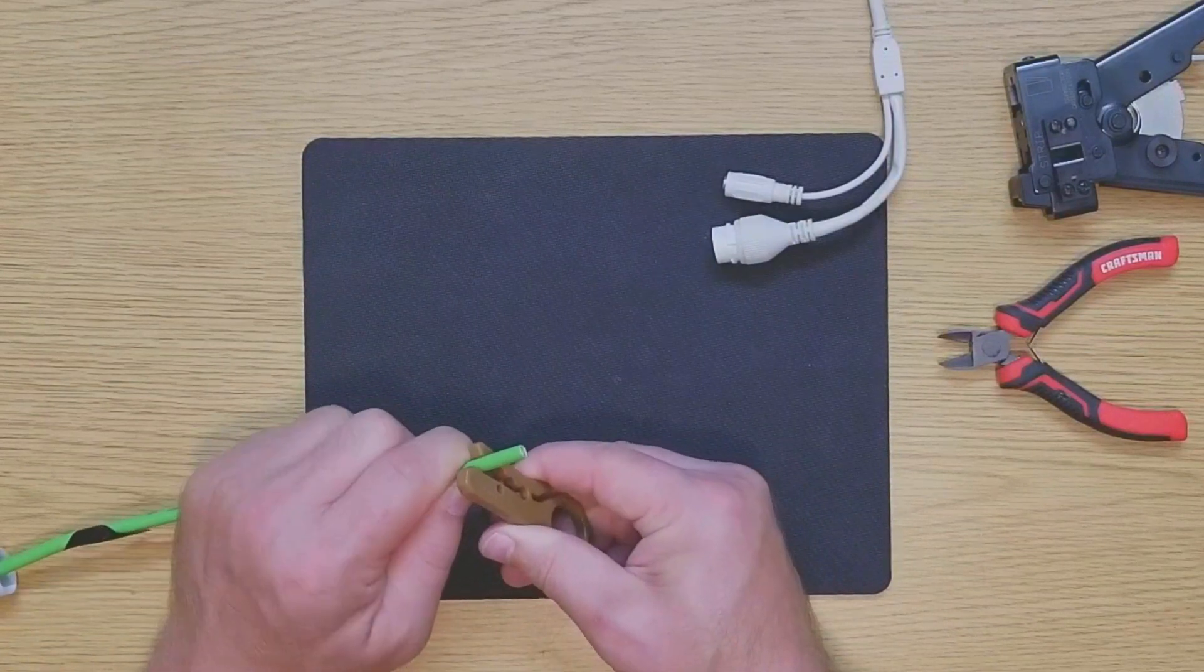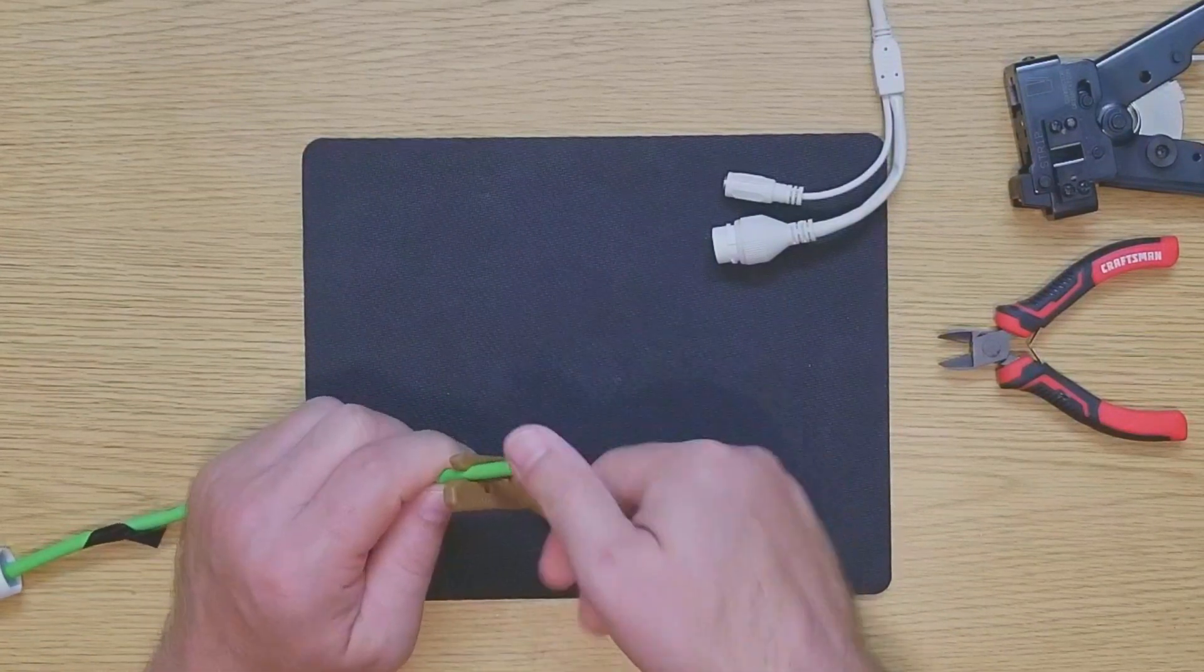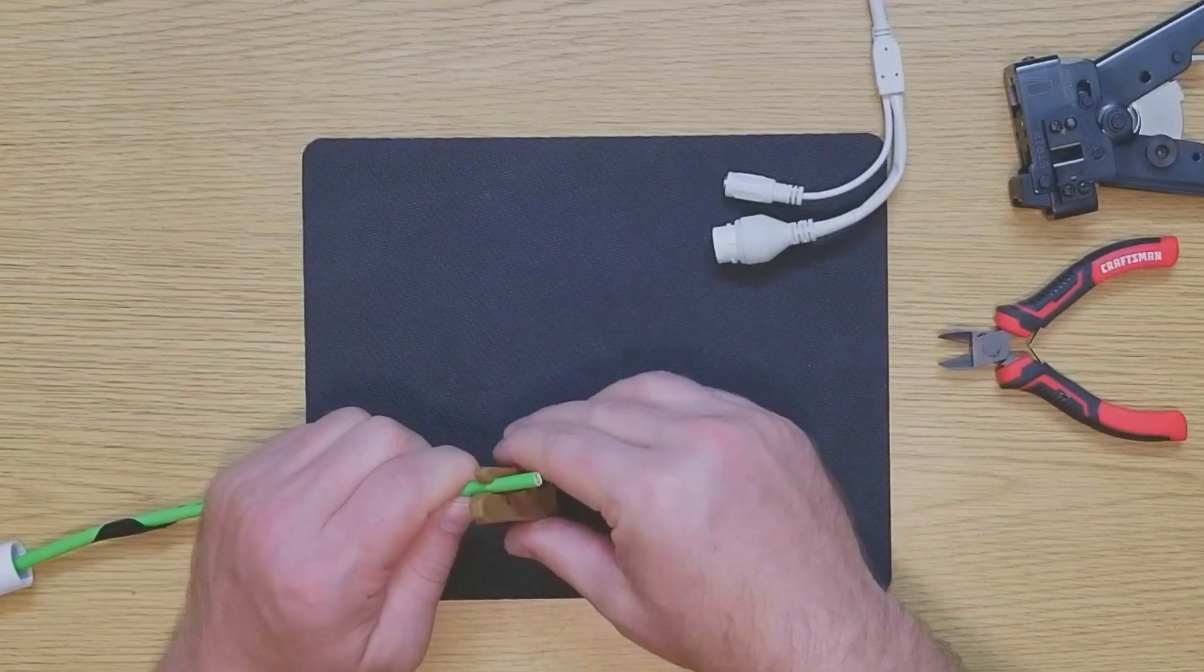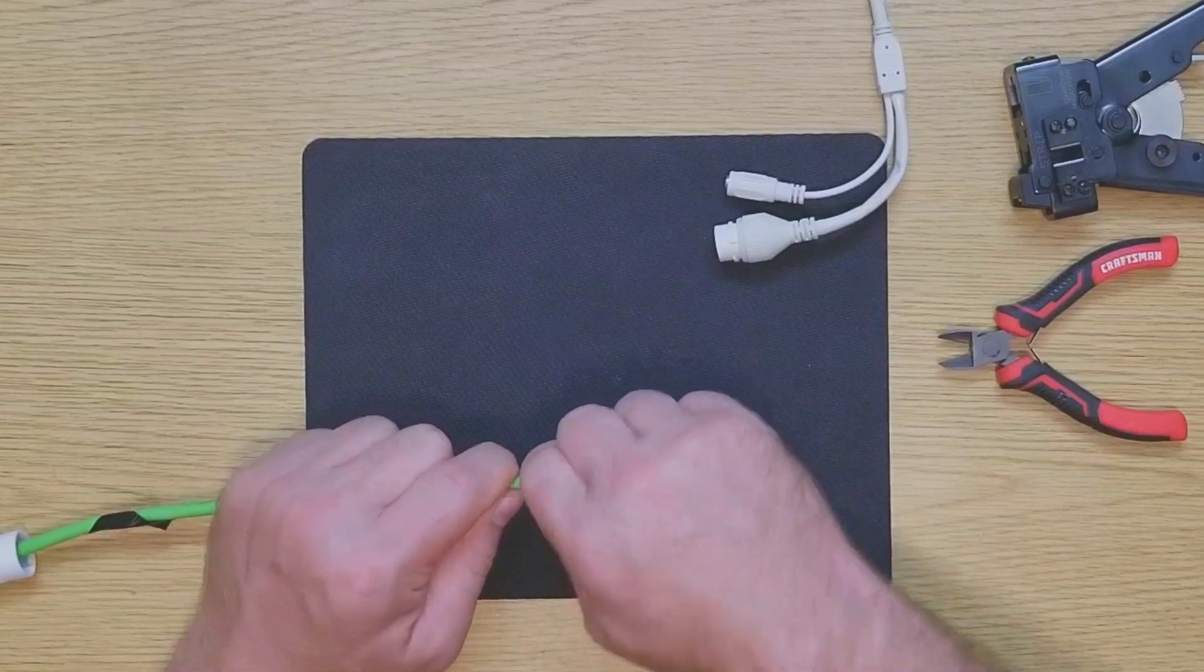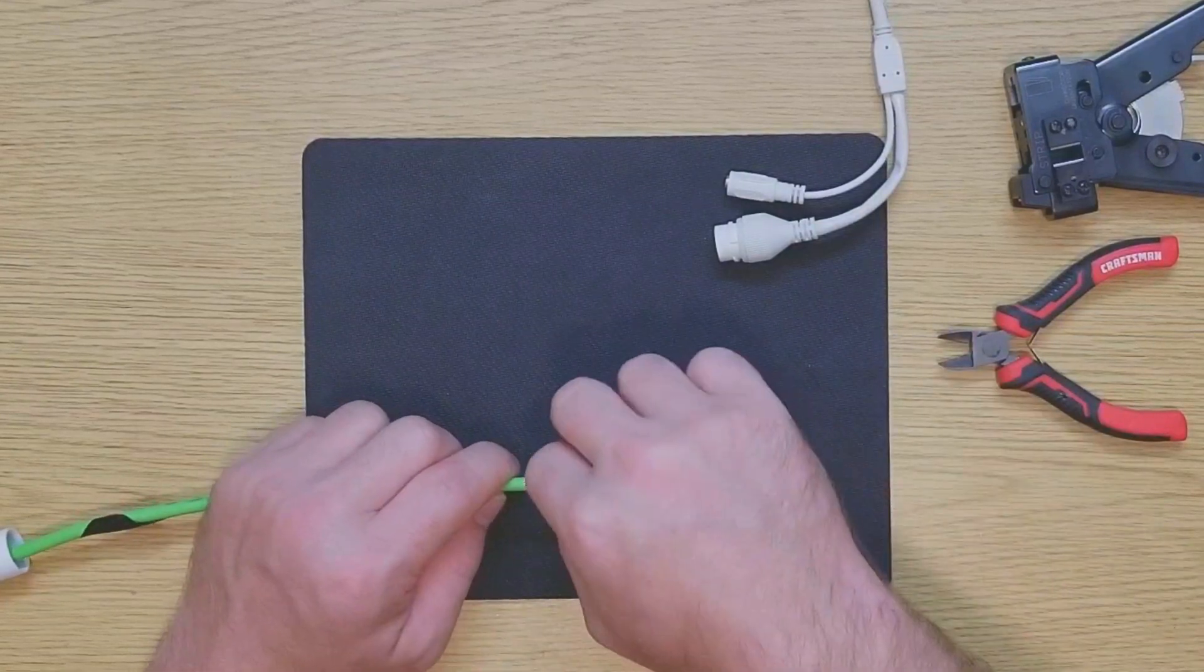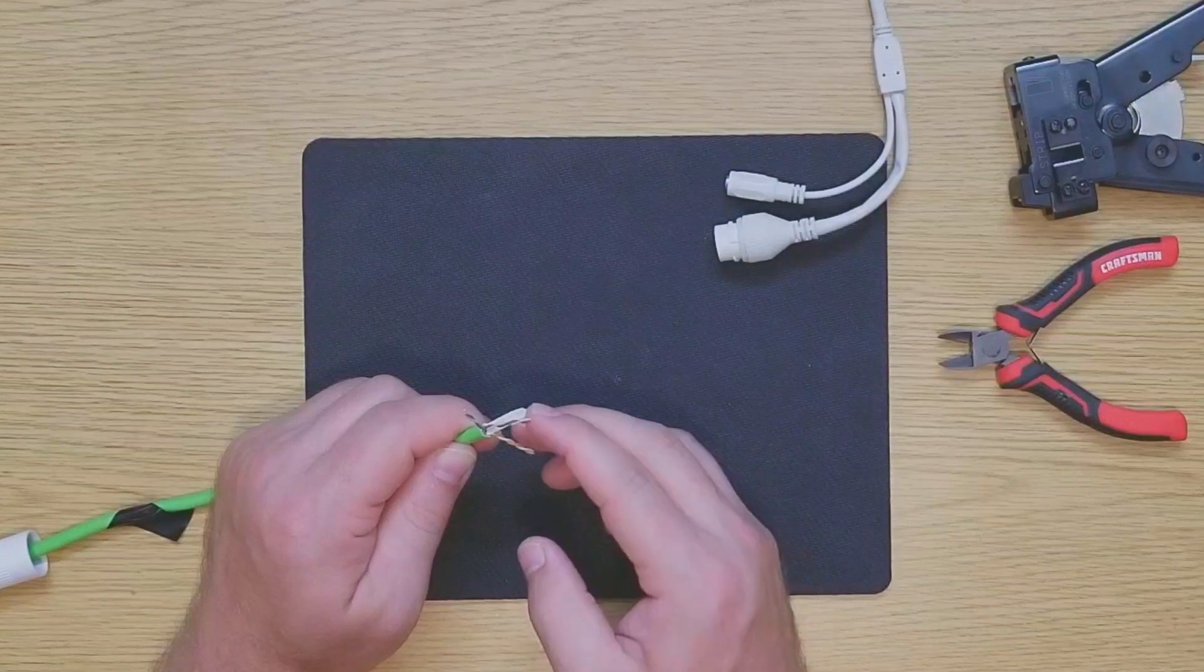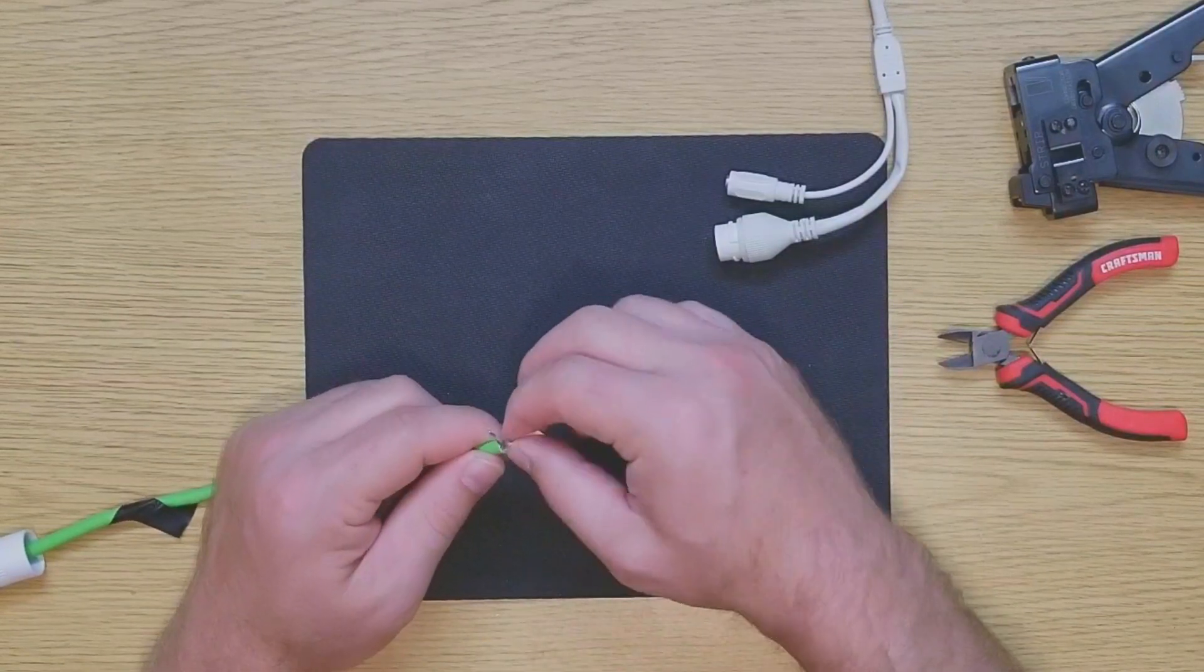Go ahead and get your insulation removal tool and remove the outer insulation jacket. Typically about one inch of insulation should be removed, and then you're going to expose the four pairs of wires inside - typically they are orange, green, blue, and brown.